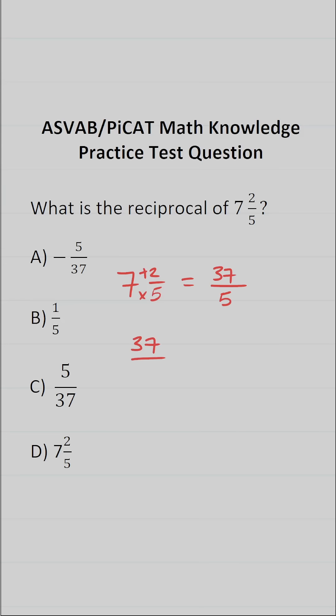Now finding the reciprocal of an improper fraction or any fraction really is very simple. All you do is exchange your numerator and denominator. In other words, the reciprocal of 37 over 5 is simply going to be 5 over 37.